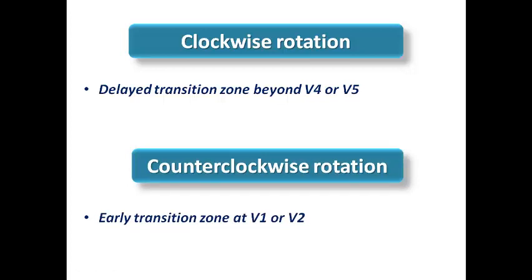To be honest, we can use the terms early transition zone, delayed transition zone, or poor R-wave progression. But why do we use clockwise and counterclockwise rotation? These terms are usually found in literature, and we need to understand where they come from.